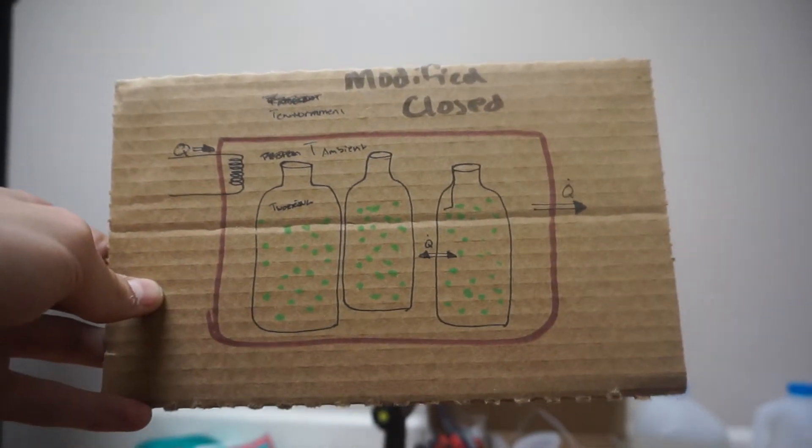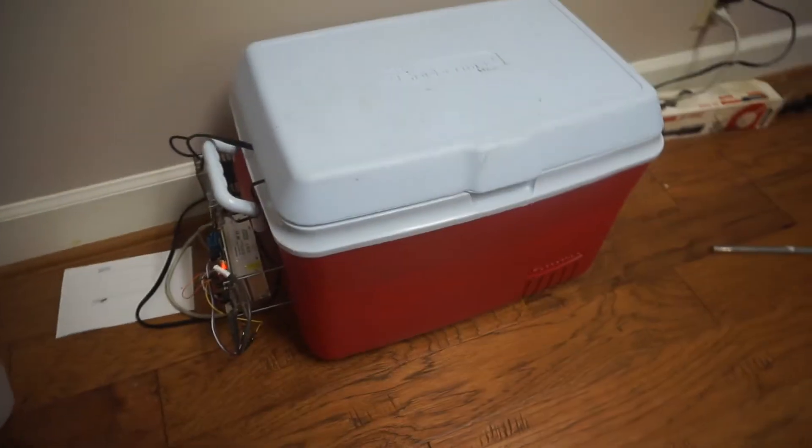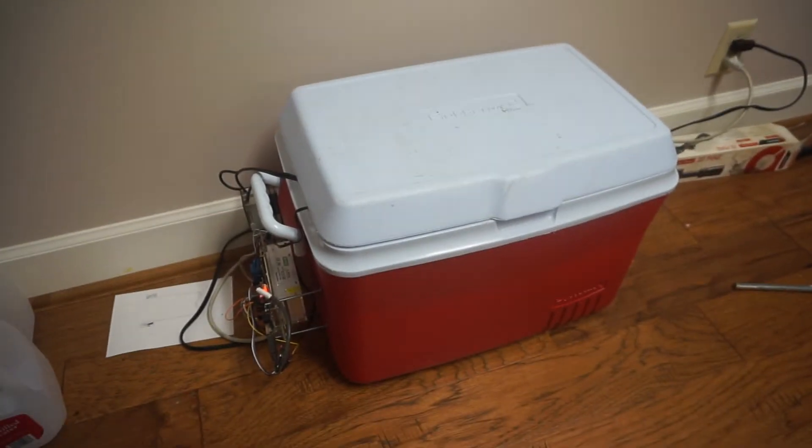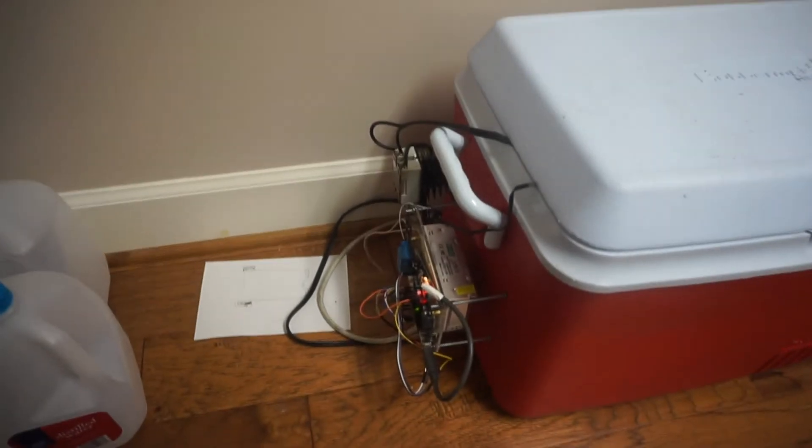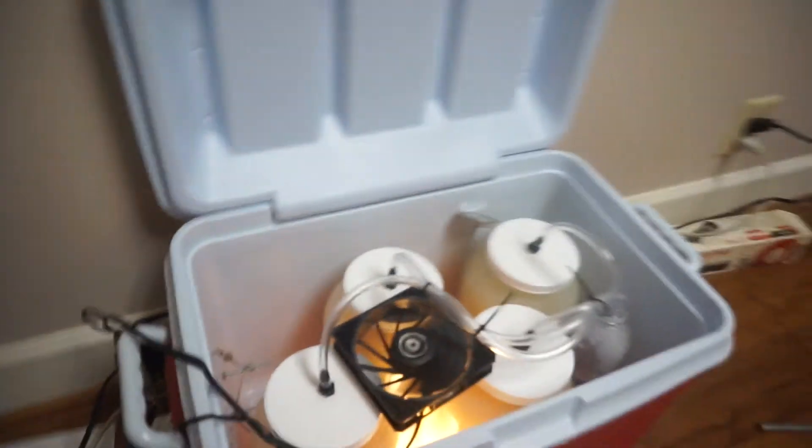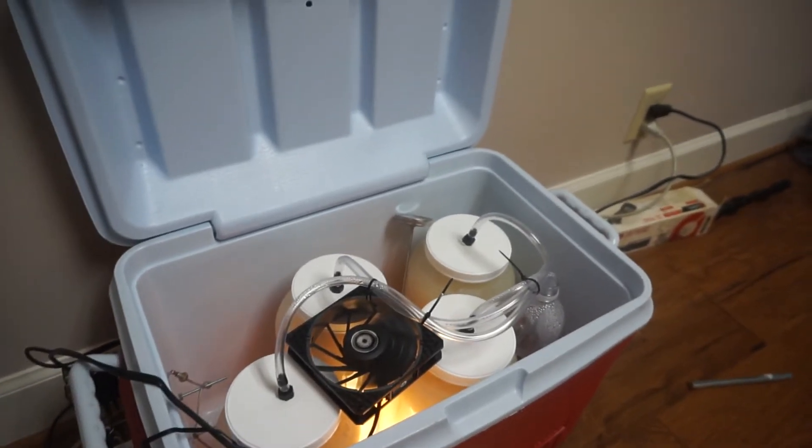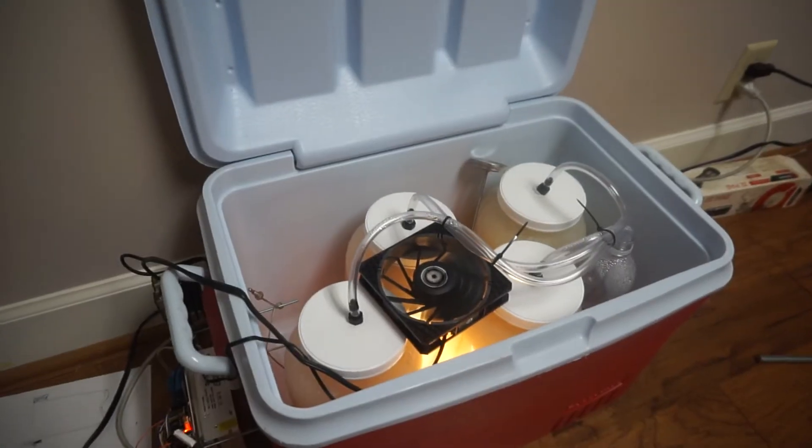Now what does that look like on a DIY scale? I put this together this past weekend and what we have is just a basic cooler. So that's our nice insulated system. We've got a little bit of a brain on the side that I'll explain. And inside the cooler, we have four gallon glass jars fermenting. So I'll go through the pieces and parts and how this works.